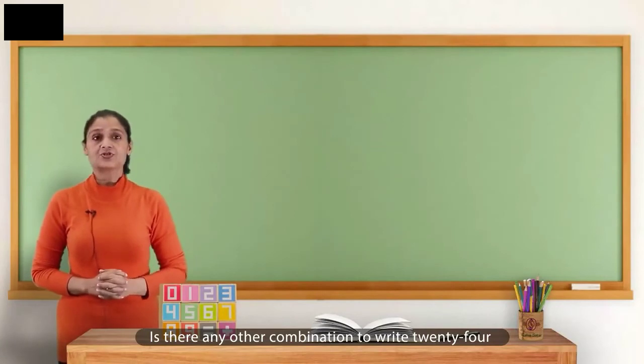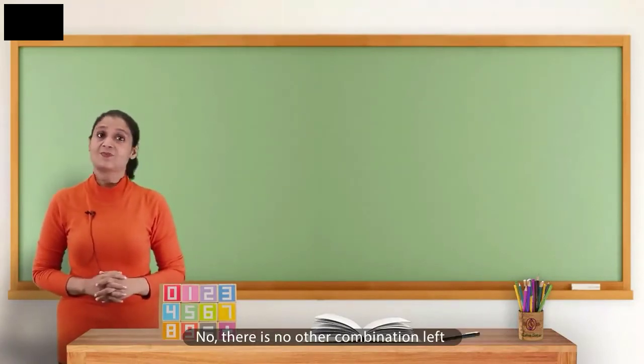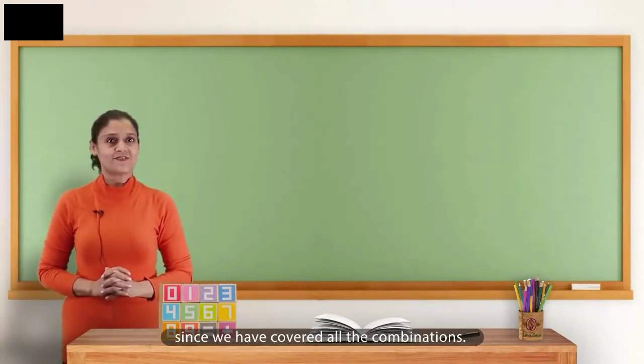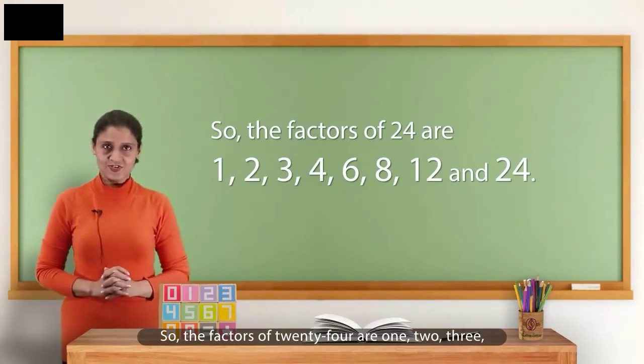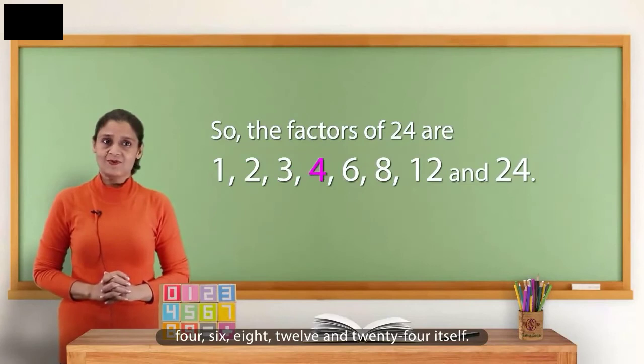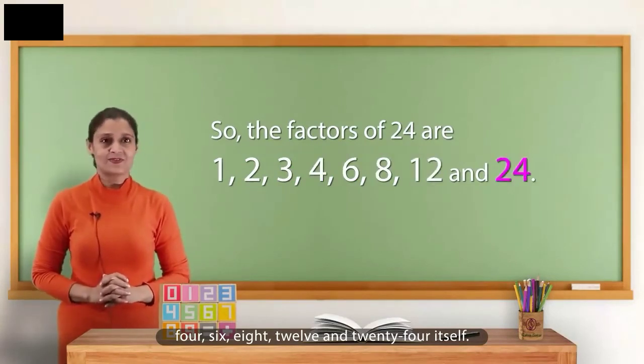Is there any other combination to write 24 as the multiplication of two numbers? No, there is no other combination left since we have covered all the combinations. So, the factors of 24 are 1, 2, 3, 4, 6, 8, 12 and 24 itself.